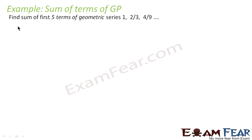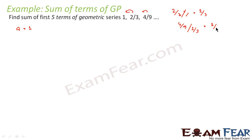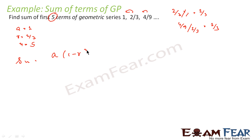We are told to find the sum of the first 5 terms of the GP: 1, 2/3, 4/9, ... Here a equals 1. To find r, divide the second term by the first: (2/3) divided by 1 gives r equals 2/3. Dividing 4/9 by 2/3 also gives 2/3. So r equals 2/3 and n equals 5. We simply use the formula Sn equals a times (1 minus r to the power n) by (1 minus r).